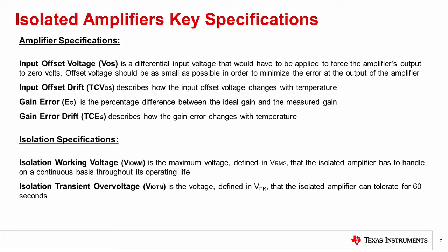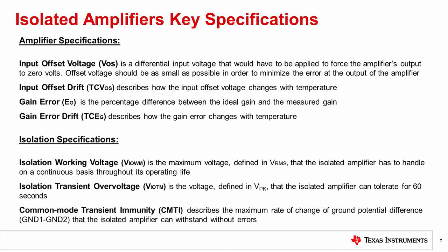Lastly, we have to define the common mode transient immunity, or CMTI, which describes the maximum rate of change of ground potential difference that the isolated amplifier can withstand without errors.